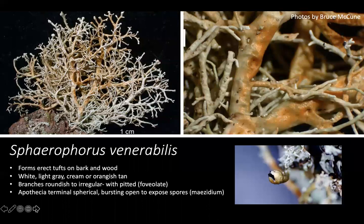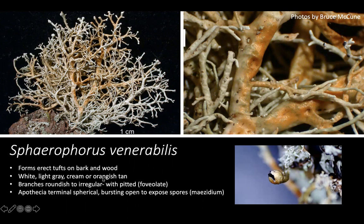Let's start with the Spherophorus. There are two species in this genus to cover. Spherophorus venerabilis forms erect tufts on bark and wood. It can be white, light gray, cream, or even take on an orangish-tan color. The branches are generally roundish to irregular with a pitted texture — you can see it's kind of puckered and pitted in places. This feature is called foveolate.